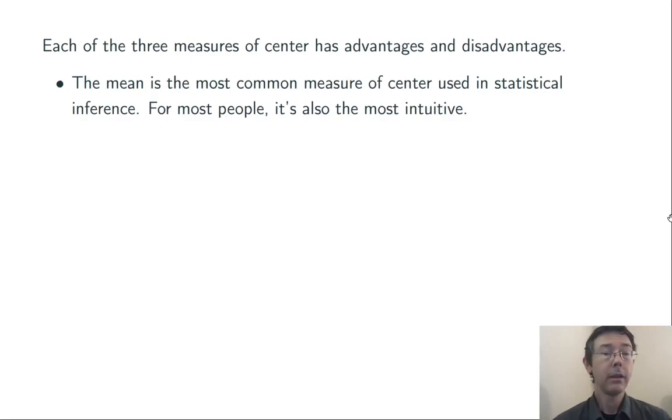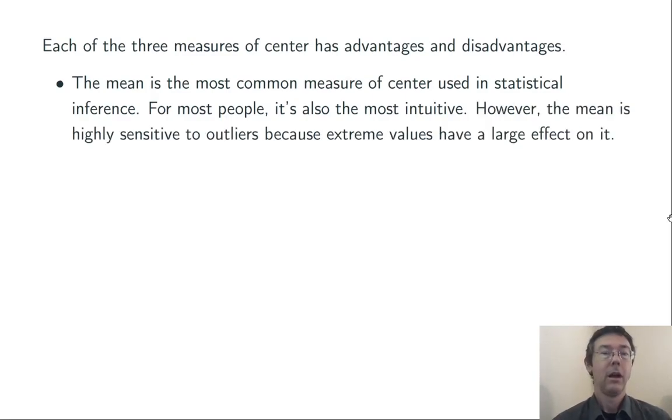The mean is the most common measure of center used in statistical analysis. When we're doing confidence intervals and hypothesis tests later on, we will be using the mean. For most of us, it's also the most intuitive measure of center. Unfortunately, the mean is highly sensitive to outliers. Extreme values have a large effect on it. It can also be problematic when you're dealing with skewed distributions, distributions that are not symmetric.